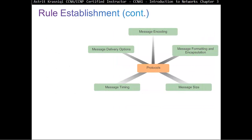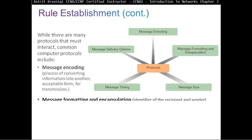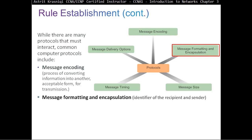There are many protocols that must interact. Common computer protocols include message encoding — the process of converting information into another acceptable form for transmission. Then we have message formatting and encapsulation, where we identify the recipient and the sender. For example, we include the IPv4 or IPv6 address of the sender and the IPv4 or IPv6 address of the receiver.